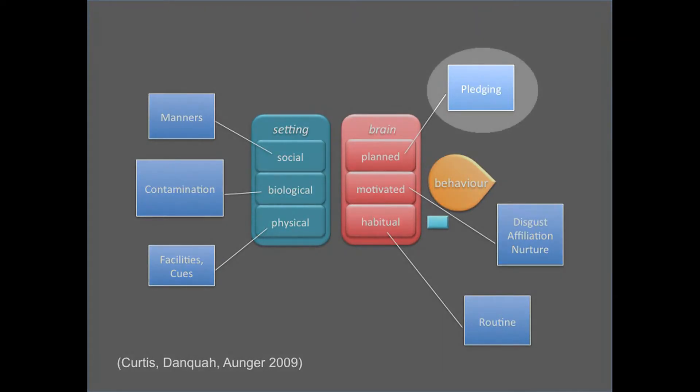I've been talking about our motivated and habitual brains and the environment, and haven't talked about the piece of brain most people think is most important — the clever cognitive brain, the conscious brain people think is making the decisions. Well, actually, it's not as important as you think. The main reason we do what we do has little to do with our cognitive brain. But we can use it — for example, getting people to pledge: I promise I will always remember to wash my hands with soap every time I come out of the toilet, every time before I feed my child or eat. That is also quite effective.